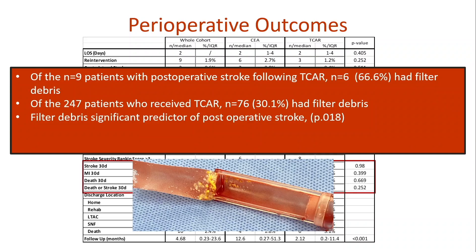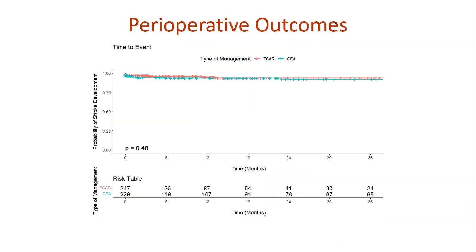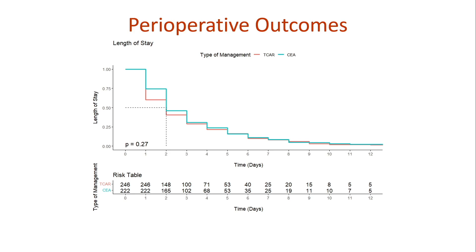We've all seen filter debris after TCAR. Of the nine patients who had a stroke after TCAR, six had filter debris, compared to 76 out of 247 patients in the non-stroke TCAR group. Filter debris was a significant predictor of postoperative stroke. Kaplan-Meier analysis of time to stroke following procedure showed no difference between groups — patients tend to stroke soon after the procedure, with a P-value of 0.48. Length of stay was similar between the two groups, with a Kaplan-Meier P-value of 0.27.